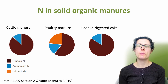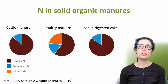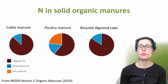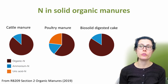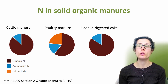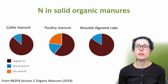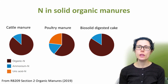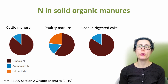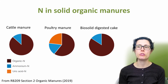Biosolids with a high dry matter, including digested cake, and also composts, be they green waste, food waste, or biosolid composts, also contain mostly organic nitrogen, with very low levels of readily available nitrogen. Manures, slurries, digestates and composts also contain other essential macro and micro plant nutrients, a subject for another day.